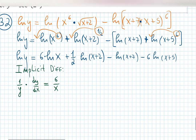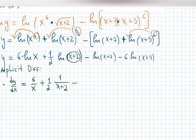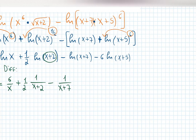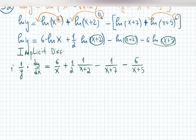Continuing: plus one-half times ln(x+2) becomes 1 over (x+2) — don't forget the chain rule, multiply by the derivative of x+2 which is 1, so multiplying by 1. Minus the same idea: 1 over (x+7) times derivative of x+7, which is 1. Don't forget we apply the chain rule every time. Minus 6 over (x+5) because the derivative of ln(x+5) is 1 over (x+5) times 1.